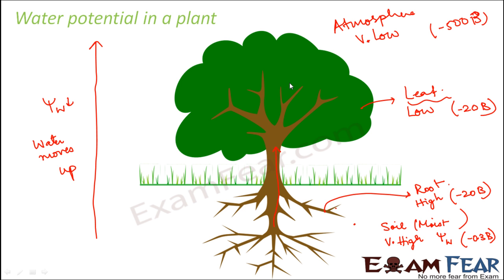But again, there is a limitation. Water potential alone cannot make water move throughout the entire length of a huge tree. Also, the water potential concept varies — if you are not watering the plant, the soil might be very dry, and water potential will not help water to move up. Similarly, if the atmosphere is not humid and is very dry, the water potential might not be that low. So there are other factors as well which help water move up the plant. We will talk about those mechanisms a little later. For now, the concept of osmosis and water potential should be clear.